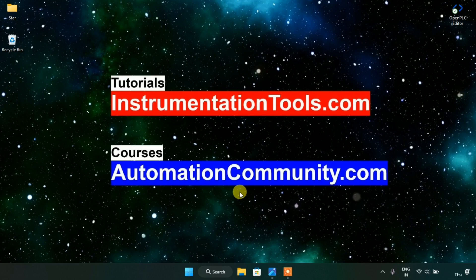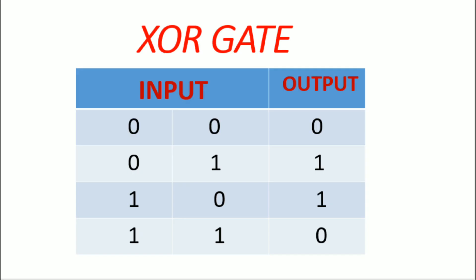Hello friends. In this video I am going to show you the last two logic gates. We already saw the NAND, NOT, OR, AND, and NOR gates. Now the last two gates are exclusive OR and exclusive NOR gates. For the exclusive OR gate, there are two inputs and a single output. When only one input is true, the output is true. When both inputs are zero or both are one, the output is zero.